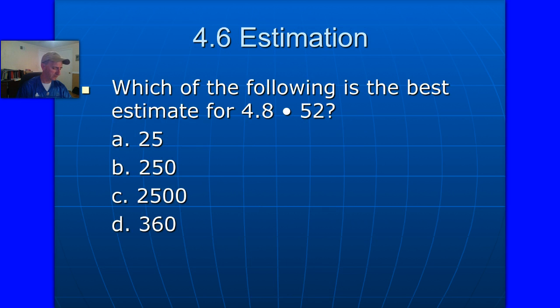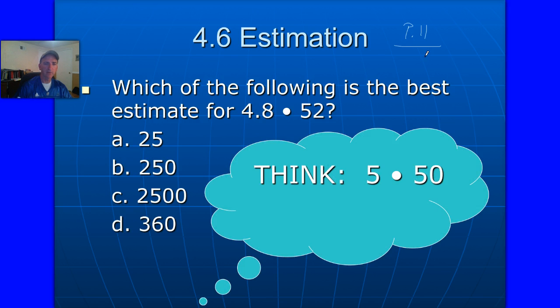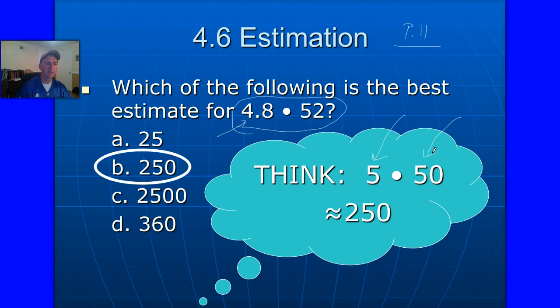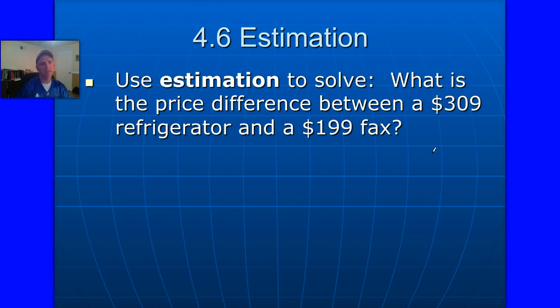Let's move on to the bottom of page 11. Let's talk about estimating. In this particular problem, it says, which of the following is the best estimate of 4.8 times 52? Basically what we're wanting you to do is just think, what would make sense to round these numbers off? As I showed you right here, that 4.8, that's about 5, and 52 is about 50. So that would give you a general idea that a pretty good estimate of that value would be about 250.